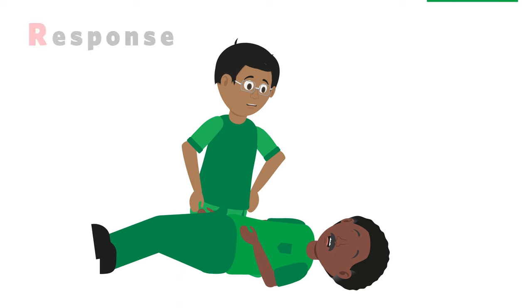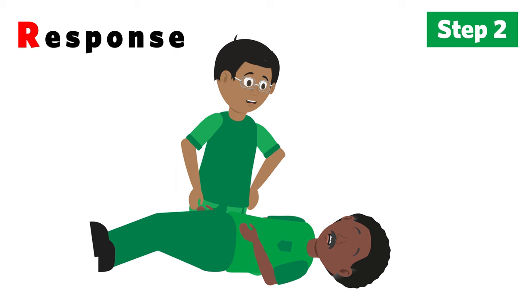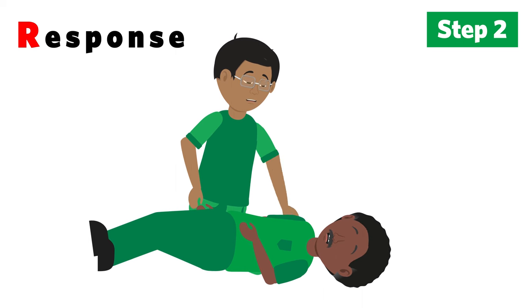R is for response. Check your casualty's response level. Ask questions and gently tap the shoulders. Say: open your eyes.